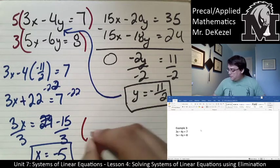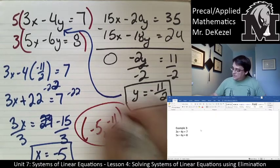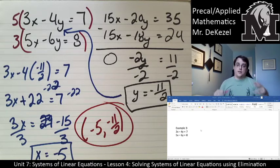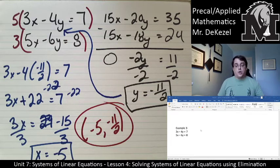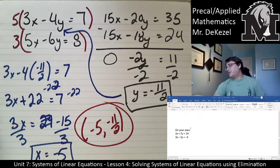Our solution is (−5, −11/2). We always want to write it out like that so we can see it clearly — circle it, put it in a box. The arrows help me follow the work; I hope they help you follow mine as well. There's one for you to try now on your own, so go ahead and pause the video.